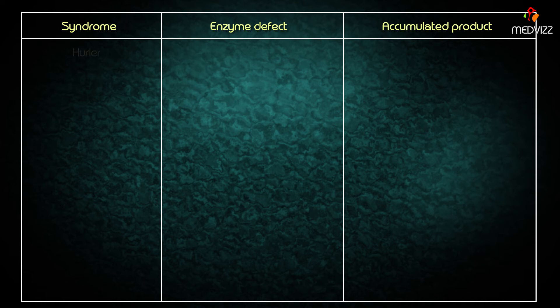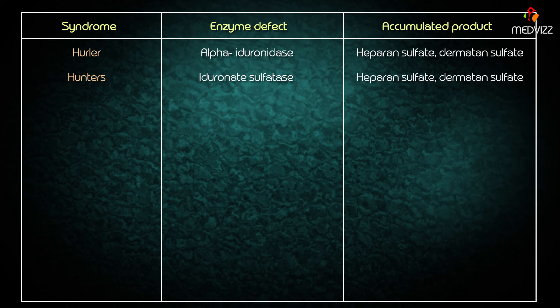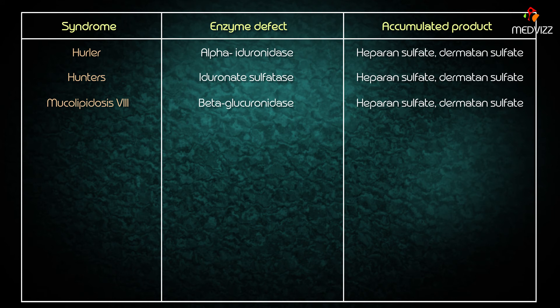In Hurler syndrome, the enzyme defect is alpha-iduronidase and the accumulated products are heparan sulfate and dermatan sulfate. In Hunter's disease, the deficient enzyme is iduronate sulfatase and the accumulated products are also heparan sulfate and dermatan sulfate. Mucolipidosis 8 results from deficiency of beta-glucuronidase, with accumulated products including heparan sulfate and dermatan sulfate. Sanfilippo type A is caused by deficiency of heparan sulfamidase, with heparan sulfate accumulation.